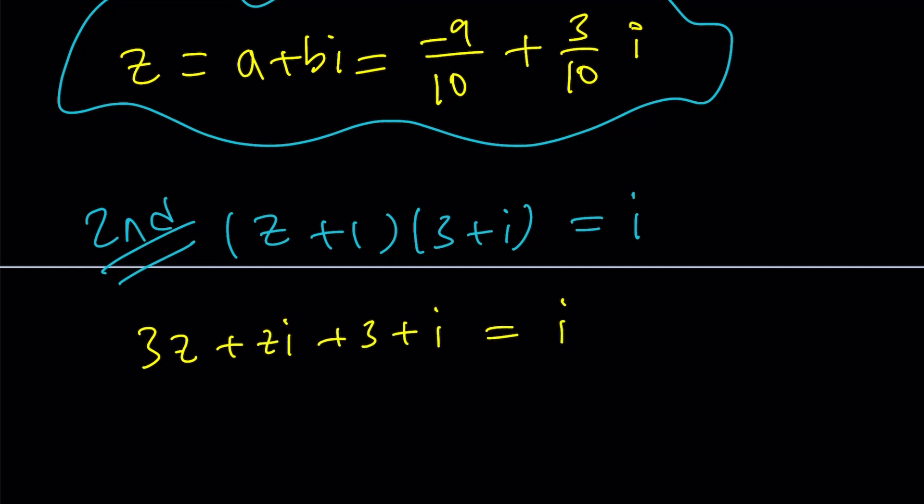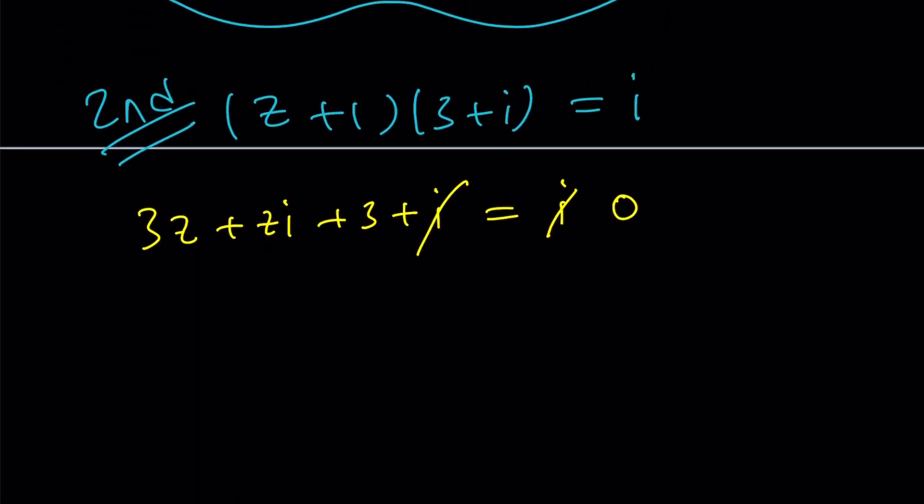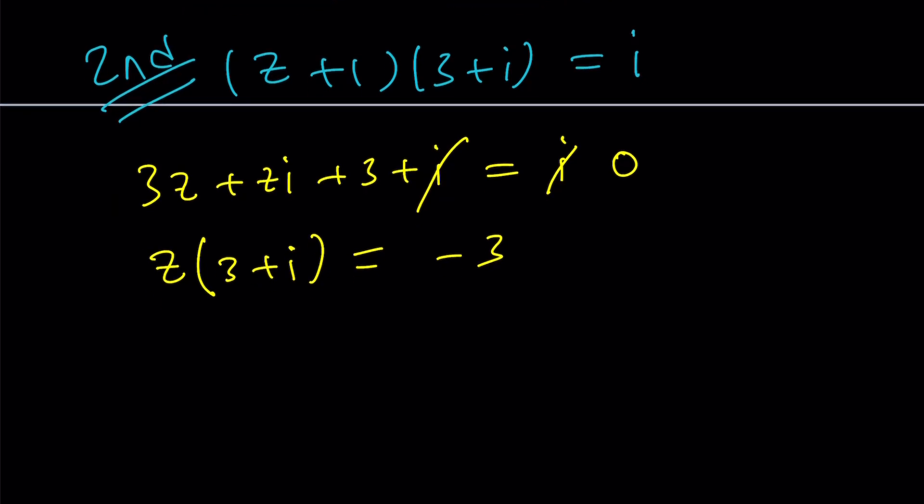Great. Why? Because I cancels out, leaving us with 0. That's kind of nice. And then we can take out a Z here and write this as 3 plus I. And then that's a 3. So let's go ahead and subtract 3 from both sides, and then that's going to give us a negative 3. Awesome. This is pretty quick, right?